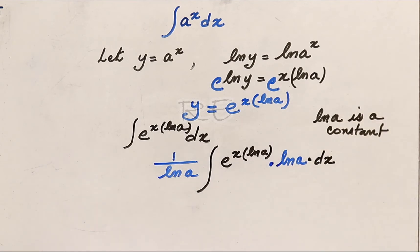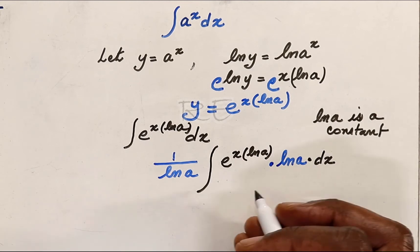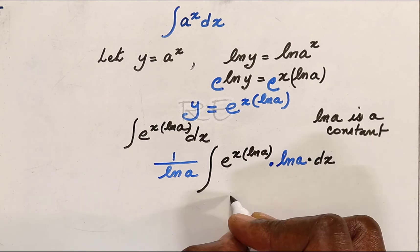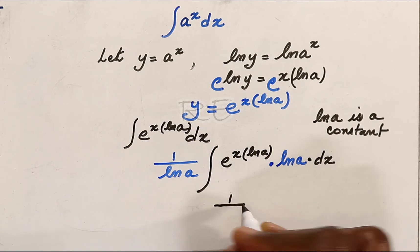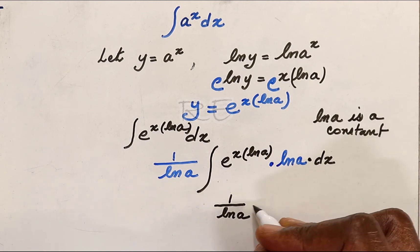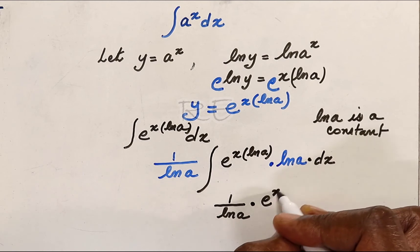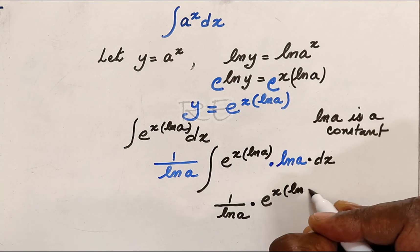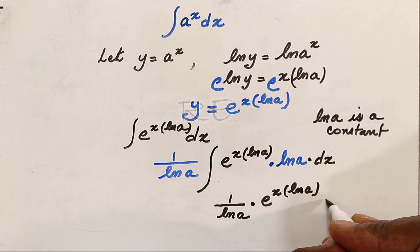Now this is integrable. And it's equal to 1 over ln a, 1 over ln a times e to the x times ln a plus c, of course.